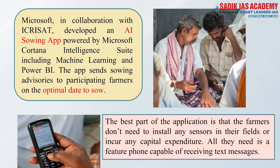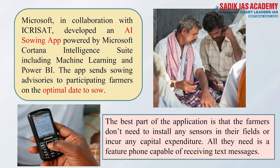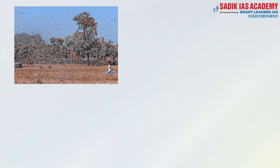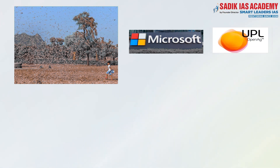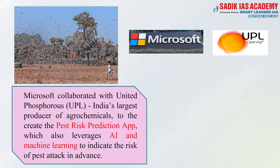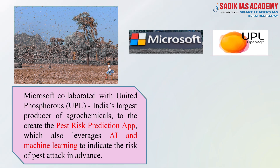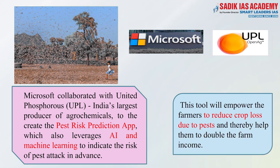The best part is that farmers need not install any sensors in their fields or incur capital expenditure — all they need is a feature phone capable of receiving text messages. We all know that in 2020, India faced one of the biggest locust attacks ever in states such as Rajasthan, Gujarat, and Madhya Pradesh. To address this, Microsoft collaborated with United Phosphorus, India's largest producer of agrochemicals, to create a pest risk prediction app that leverages AI and machine learning to indicate in advance the risk of pest attack, helping farmers plan to reduce crop loss.